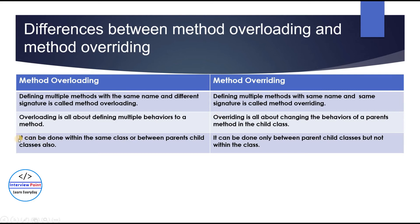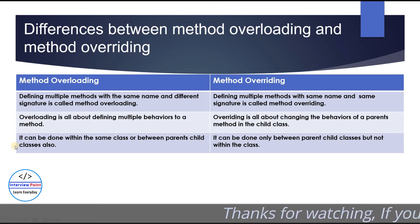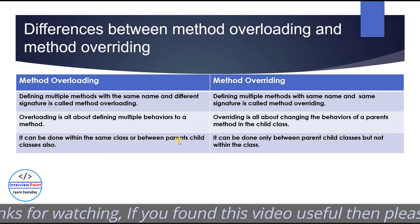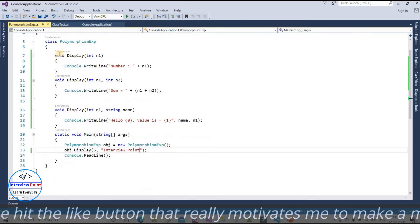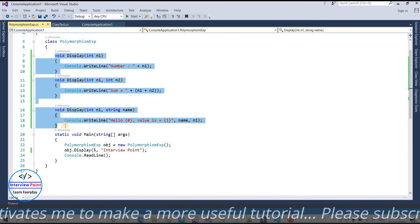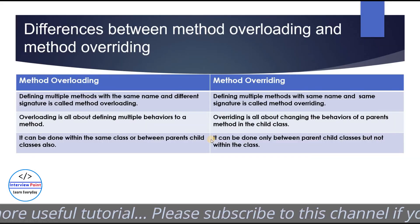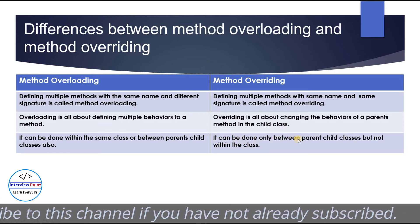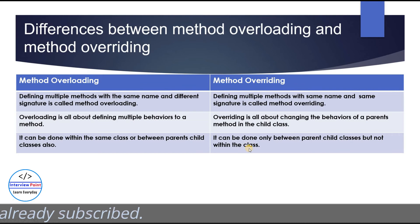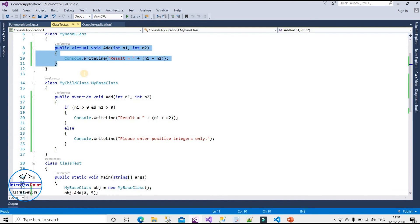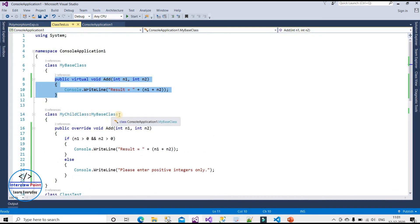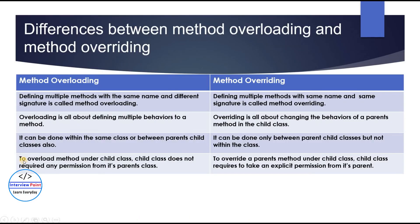The third difference: method overloading can be done within the same class or between parent and child classes. Method overriding, however, can only be done between parent and child classes — it is not possible within the same class. So when working with method overriding, we must have a parent-child class relationship.